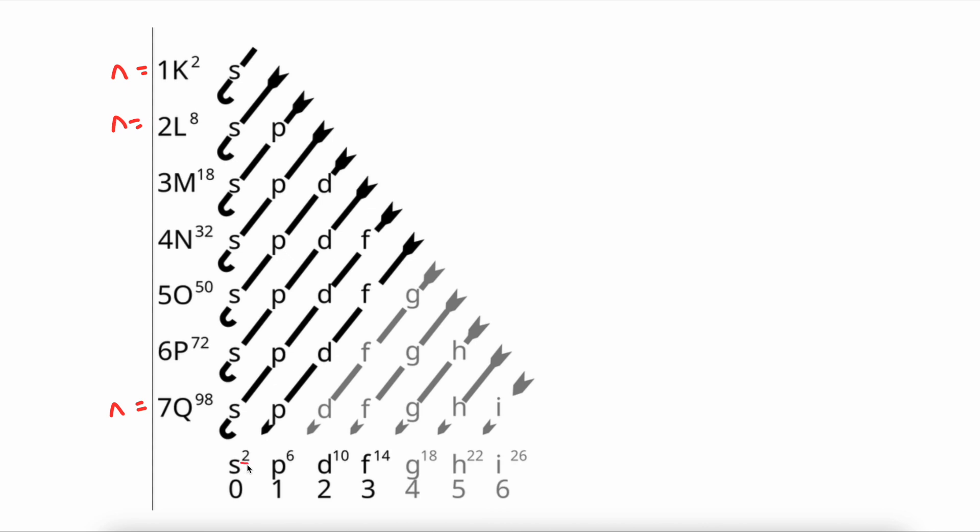Down here, you'll notice that each letter is raised to a power. This number represents the amount of electrons we can fit in each one of these sublevels. The S sublevel can hold 2 electrons. The P sublevel can hold 6 electrons. You'll notice that this number increases by a value of 4 each time.